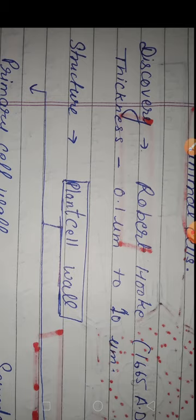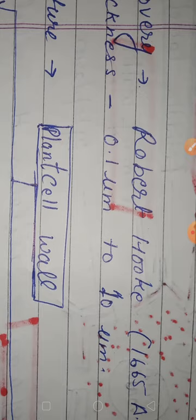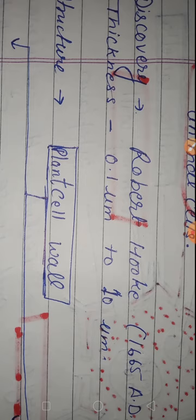The discovery of cell wall: Robert Hooke in cork cells in 1665. The thickness of cell wall is 0.1 μm to 10 μm. The structure of cell wall may be divided into two parts: primary cell wall and secondary cell wall.